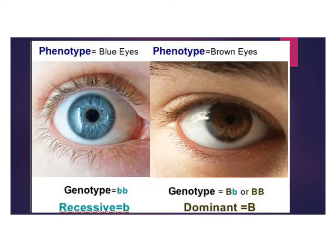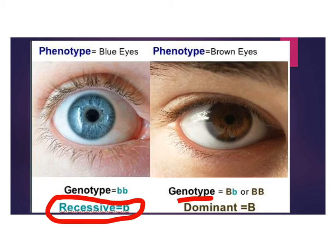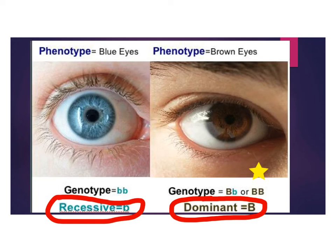Here's an example for eye color. Although eye color is more complicated than this, we can think of it simply as blue eyes being recessive and brown eyes being dominant. This individual with brown eyes could have either the heterozygous or the homozygous dominant genotype, and either way will show the brown eye phenotype. On the other hand, if the individual has the homozygous recessive genotype — two lowercase b's — it will show the blue eye phenotype.